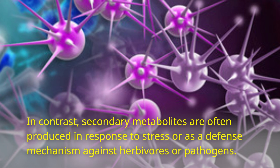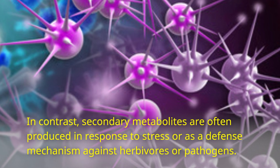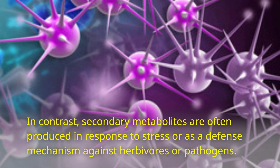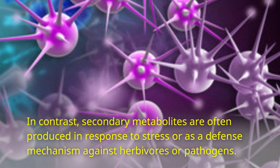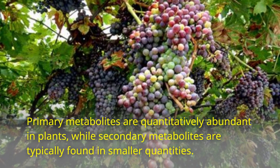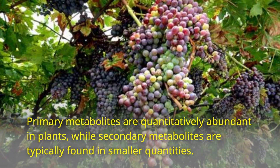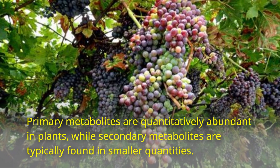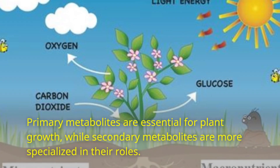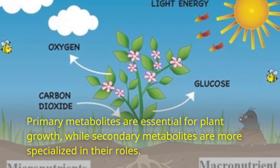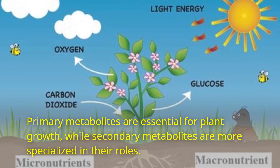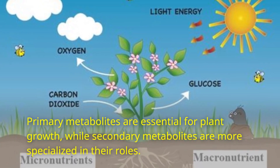In contrast, secondary metabolites are often produced in response to stress or as a defense mechanism against herbivores or pathogens. Primary metabolites are quantitatively abundant in plants, while secondary metabolites are typically found in smaller quantities. Primary metabolites are essential for plant growth, while secondary metabolites are more specialized in their roles.